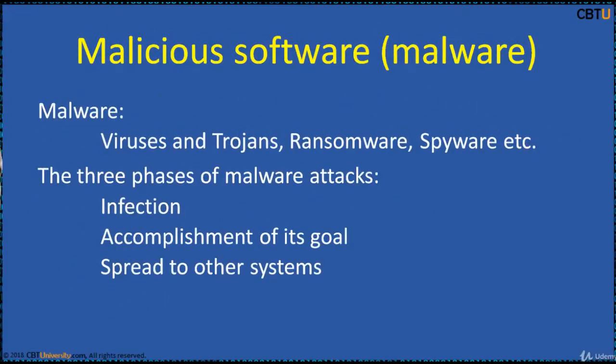Trojans, worms, virus, ransomware, spyware — all these are malwares. The attack on a smartphone by malware happens in three phases: infection of the host, accomplishment of its goal or objective, and spread to other systems. It may use the address book or the email address of the person to infect the user's contacts. The malware exploits the trust that is given to the data sent by an acquaintance. Mobile ransomware is a type of malware that locks users out of their mobile devices until they pay a ransom amount.